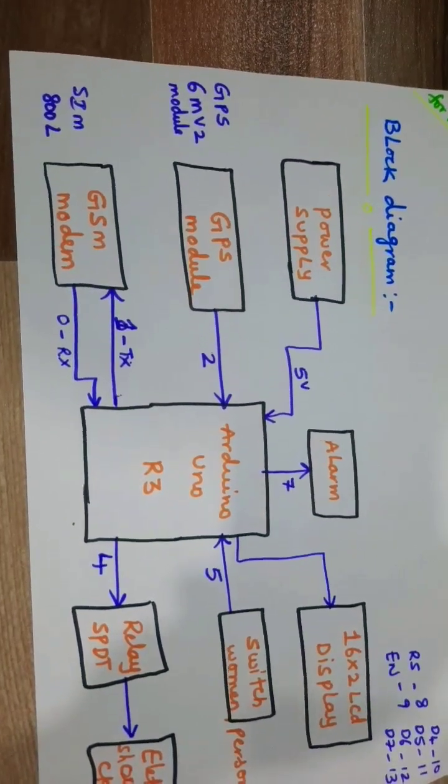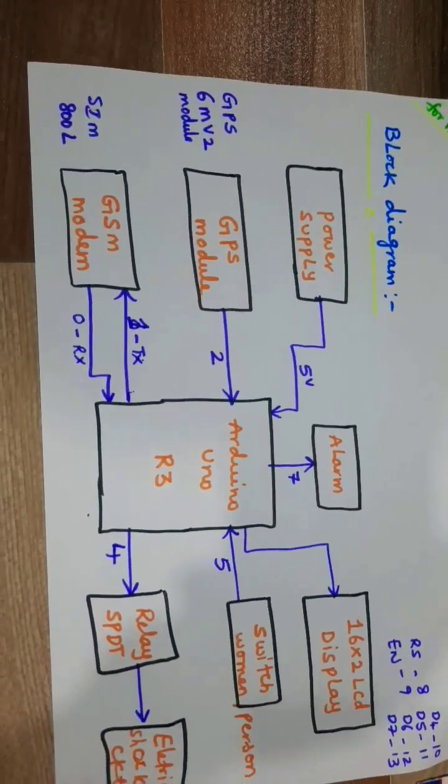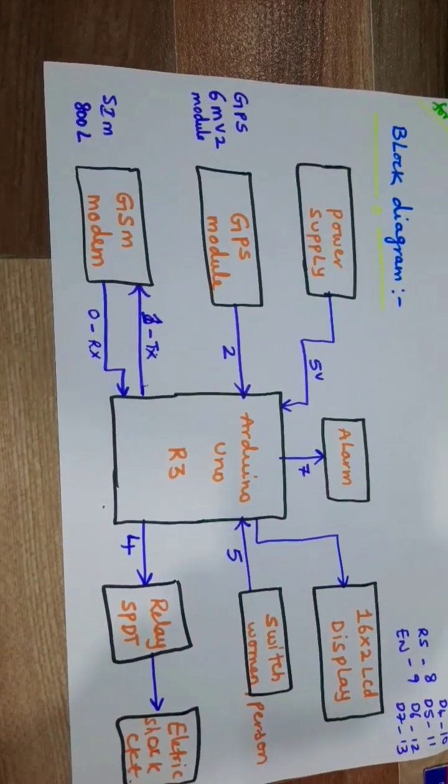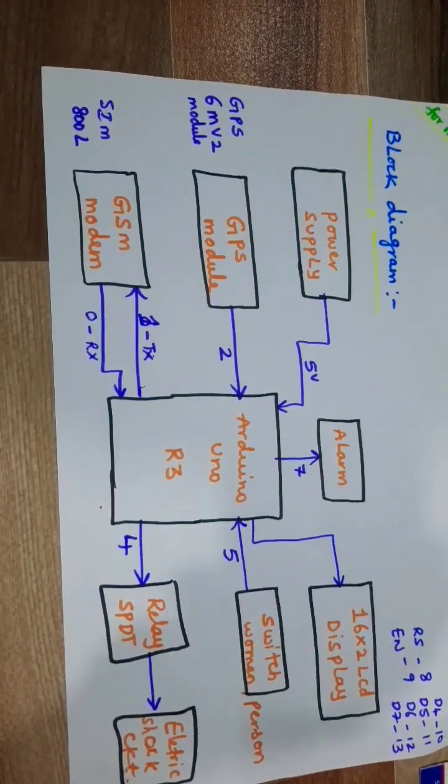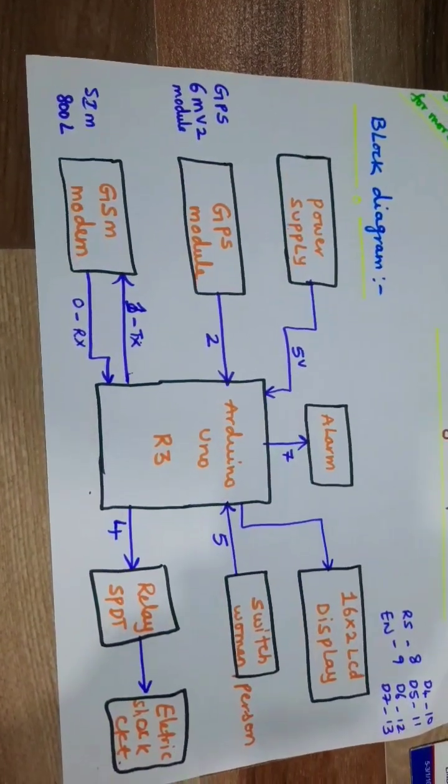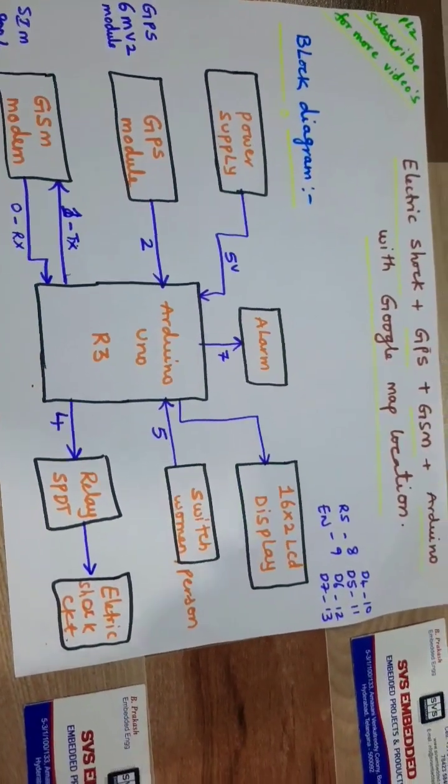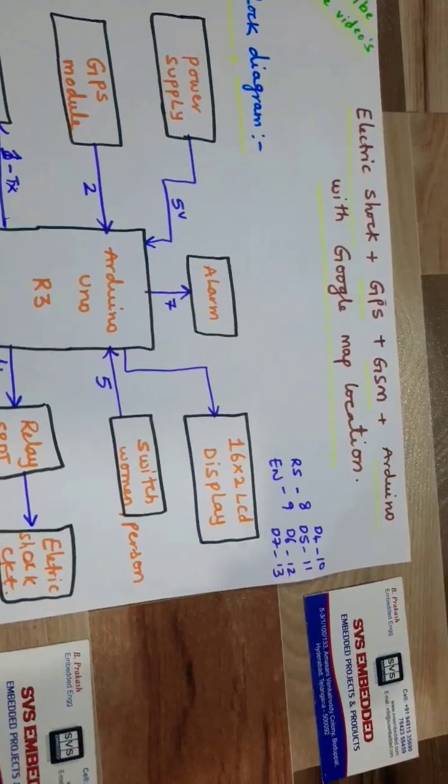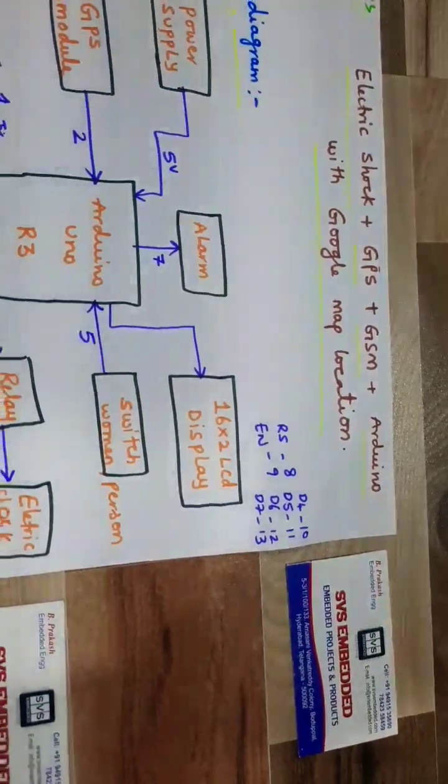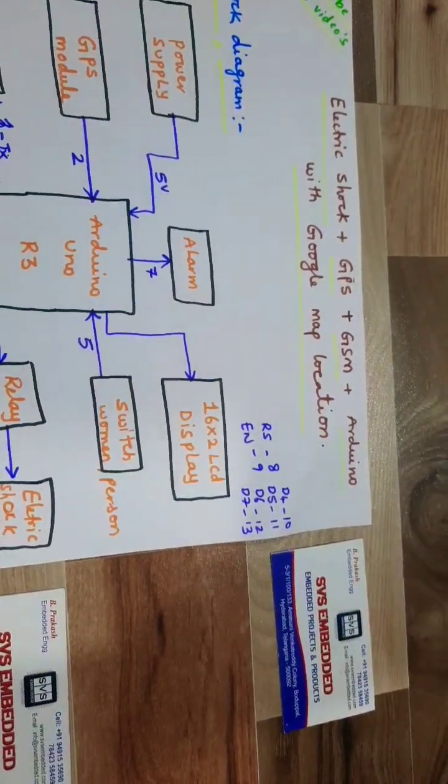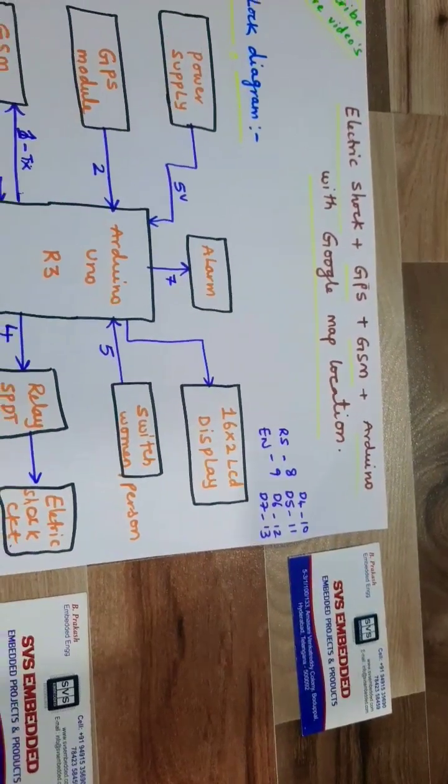We will get the exact latitude and longitude from the satellite. GSM SIM800L is connected to pins 0 and 1. GPS is connected to pin 2, alarm to pin 7. 16x2 LCD display is connected to RS, Enable, D4, D5, D6, D7 at pins 8, 9, 10, 11, 12, 13.